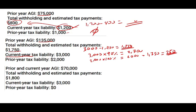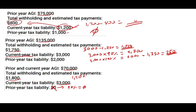Example three: prior and current year AGI is $70,000. Total withholding and estimated tax is $1,800. Current year tax liability is $3,000. Prior year tax liability is zero. The difference between $3,000 and $1,800 is $1,200, so the $1,000 threshold is exceeded. However, if the prior year tax liability is zero, you take zero times 100%, which gives zero. Therefore, if your prior tax liability is zero, there is no underpayment of penalty — the answer is zero.